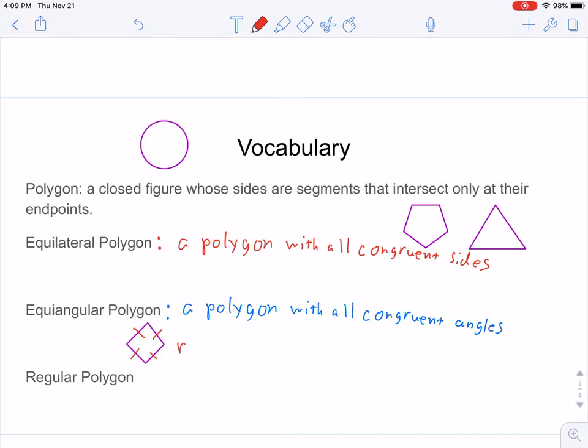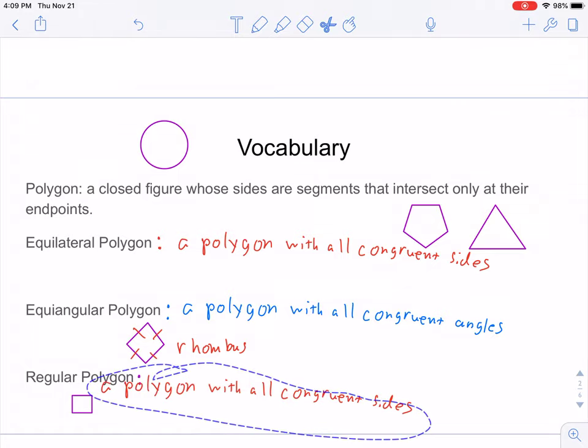Like this rhombus. If we do have something that has all of its sides equal and all of its angles equal, that's not going to work. Like this, but it's almost a square. Then, it's called a regular polygon.